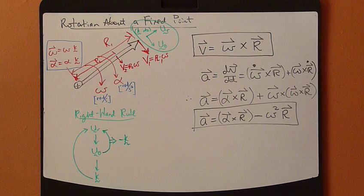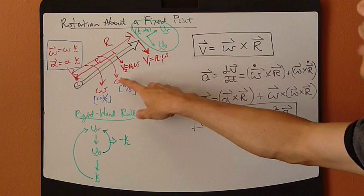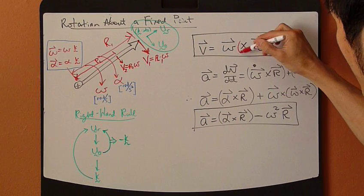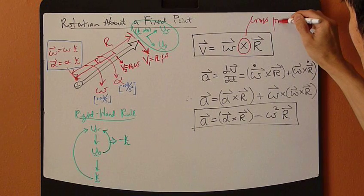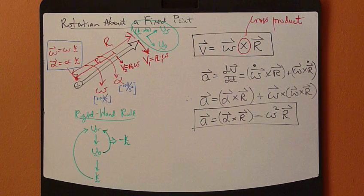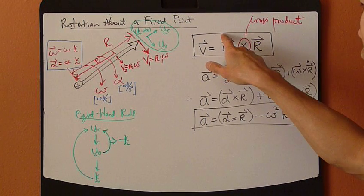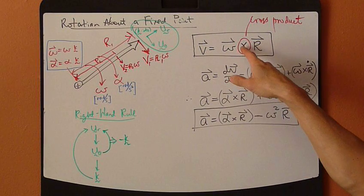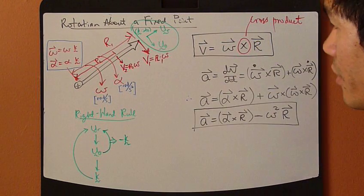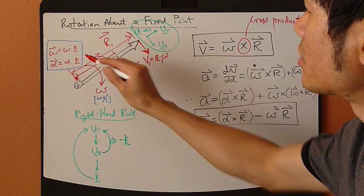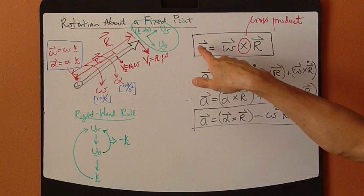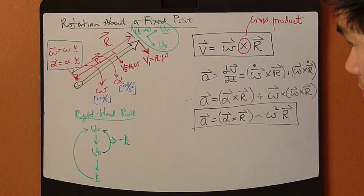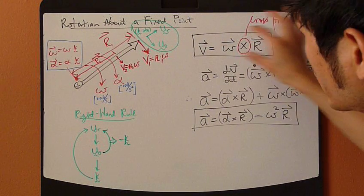The relationship between linear velocity and angular velocity is given by a cross product equation. The velocity equals omega cross R. The first vector is the angular velocity vector, crossed with the R vector. This is the vector representation, and the scalar form gives you the magnitude.